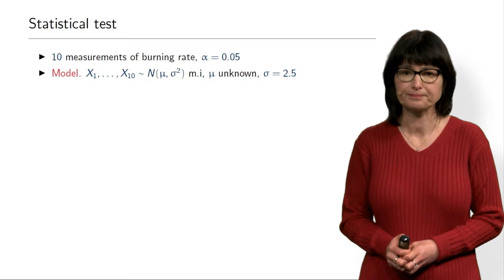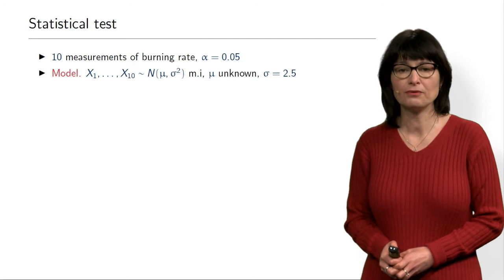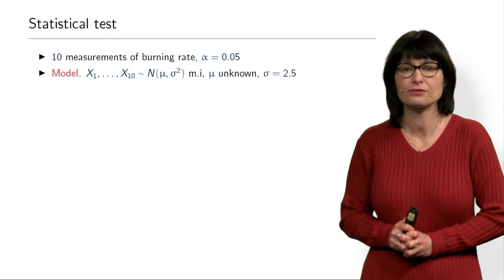The average burn rate is unknown — that's what we are interested in. For the time being, we assume that sigma, the standard deviation, is known. Of course, in reality it will not be known, but we will discuss that another time. For this particular topic, it's not very important, so we simply assume sigma is known.